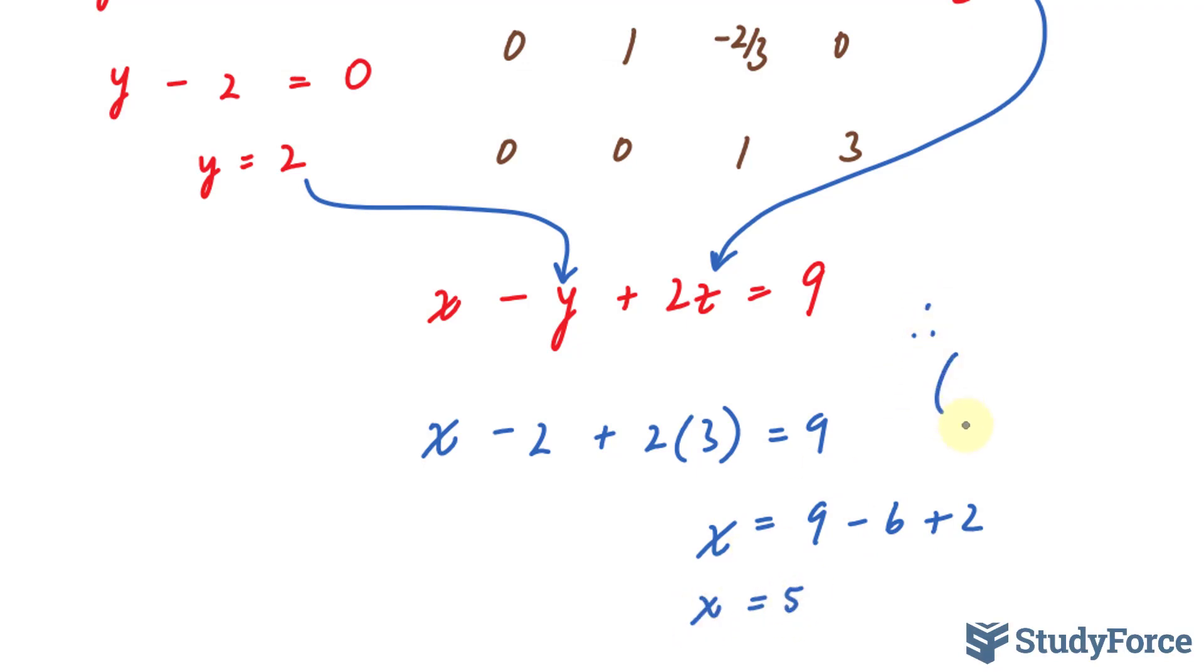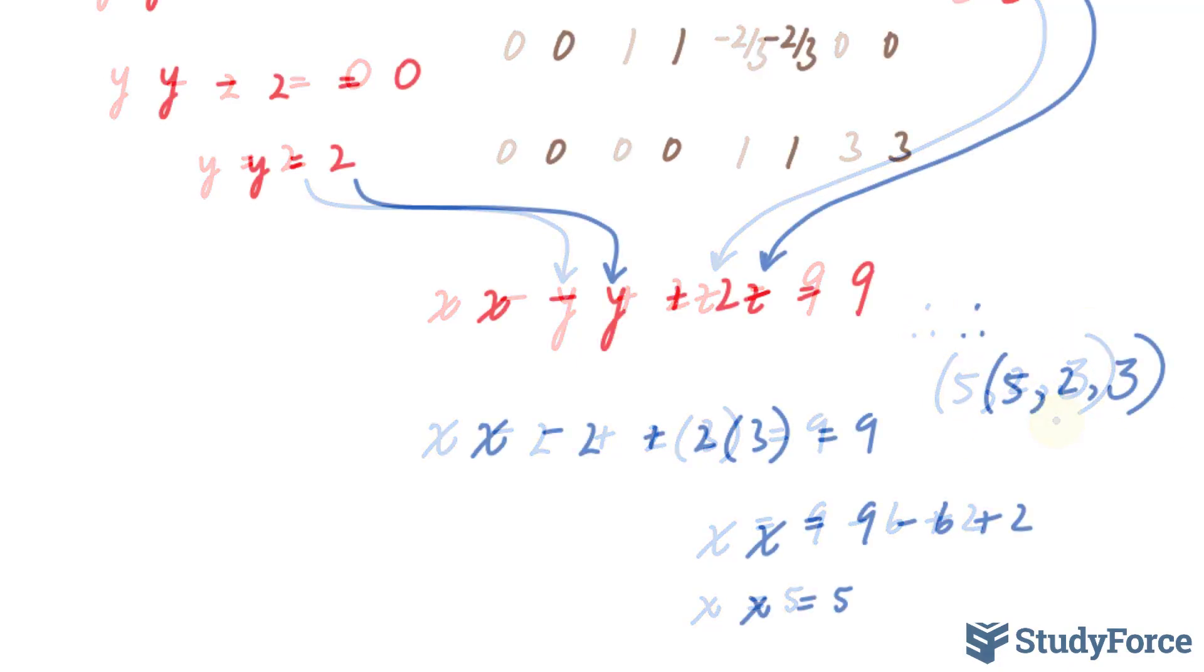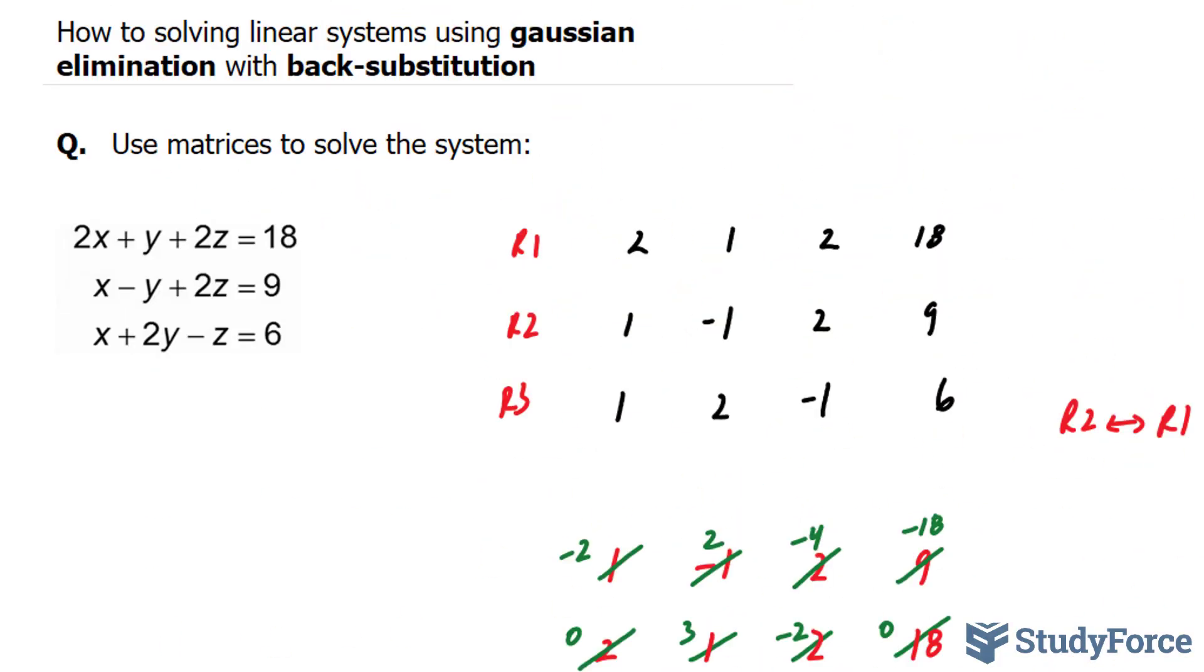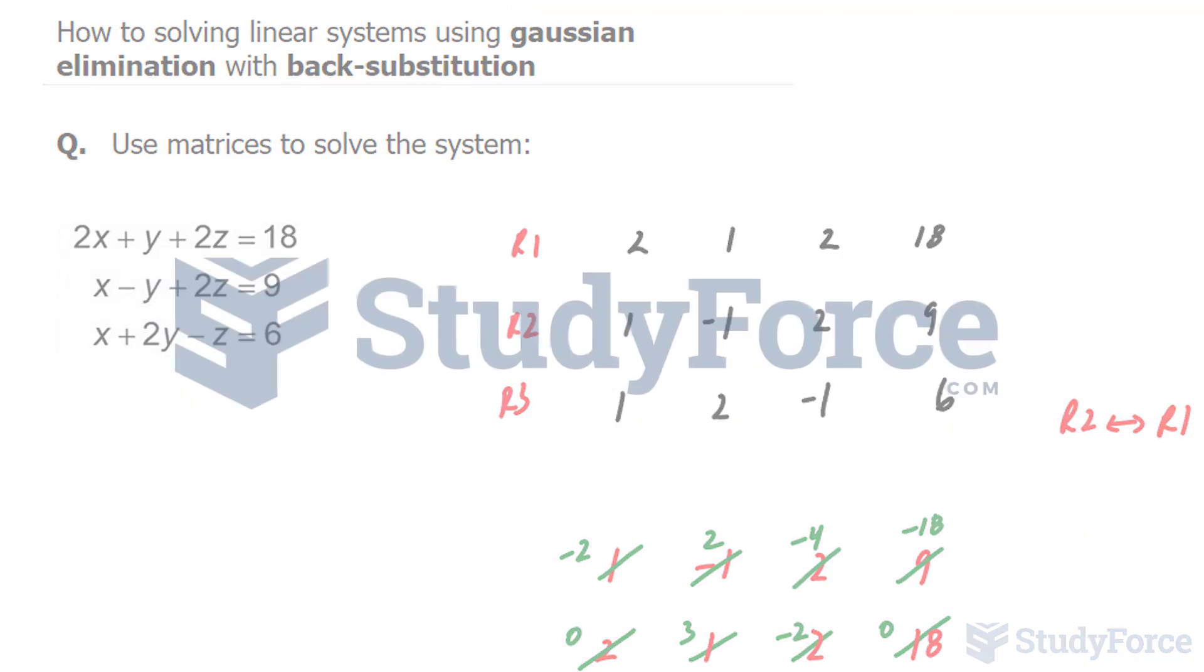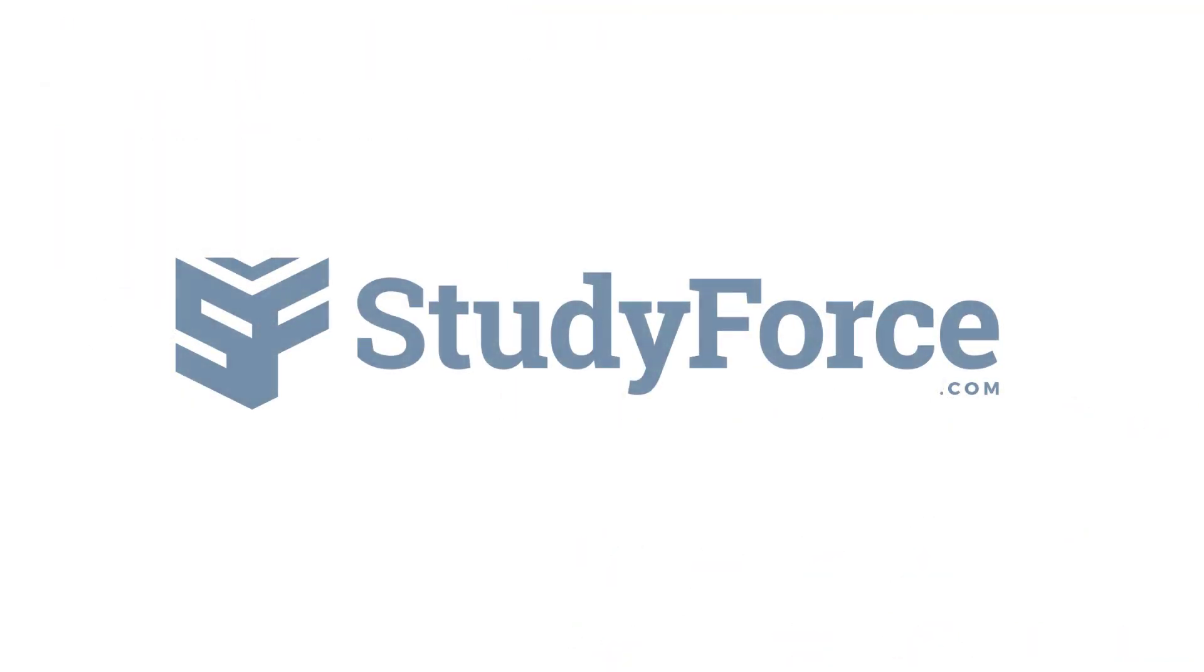Therefore, our final answer is 5, 2, and positive 3. And there you have it. That is how to solve linear systems using Gaussian elimination with back substitution.